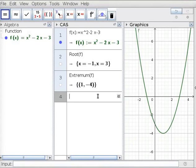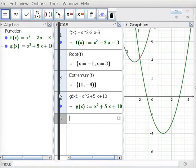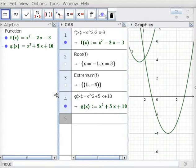In line 4 in CAS view, type g(x) := x^2 + 5x + 10. Press Enter. Drag boundary to see algebra view properly. Observe the equation g of x in algebra view.